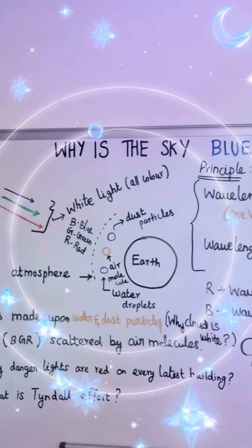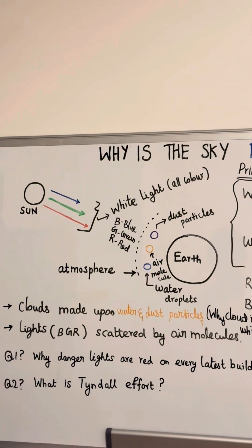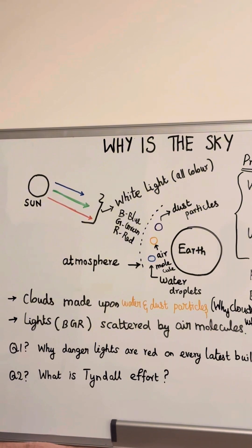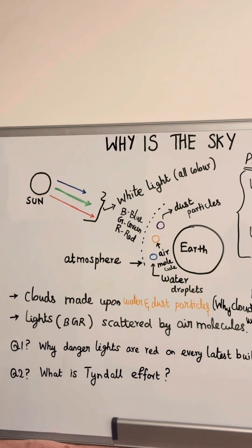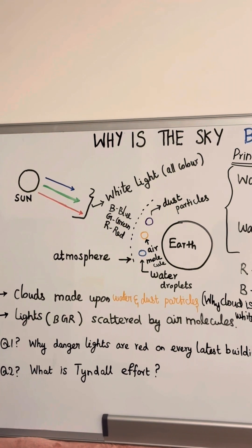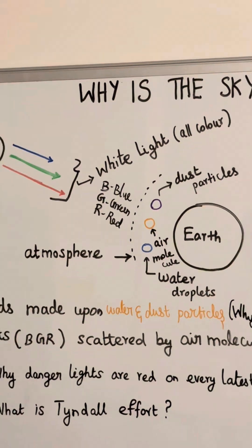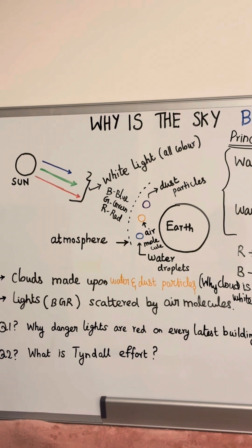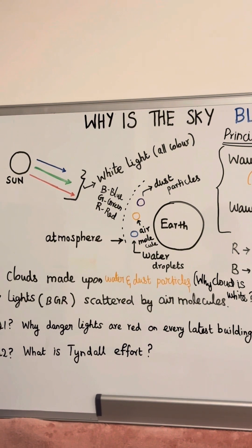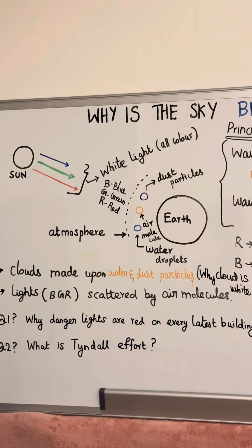Sun is producing all colors of light. All colors, once they reach out the atmosphere, are scattered by air molecules, dust particles, water droplets. Clouds made upon water droplets and dust particles, so clouds scatter all the cloud equally. Hence clouds is white.